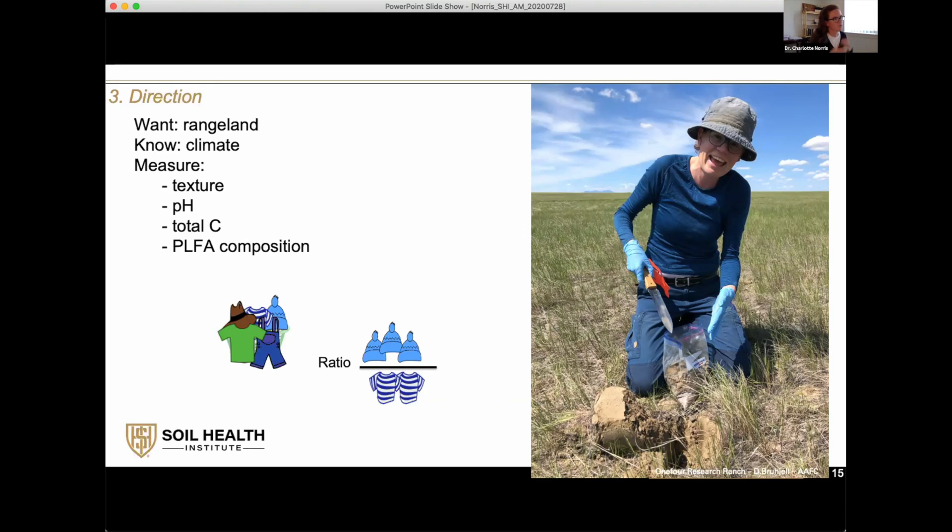When I was collecting the last sample at the rangeland at one-four, you know the climate, these inherent intrinsic properties. From that, you assess perhaps this ratio and understand, within these caveats of the landscape and climate, that you expect a certain ratio. It's not quite there, but you also know it's heavily grazed.